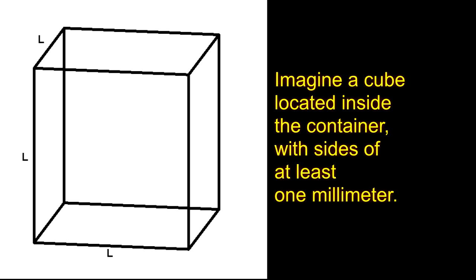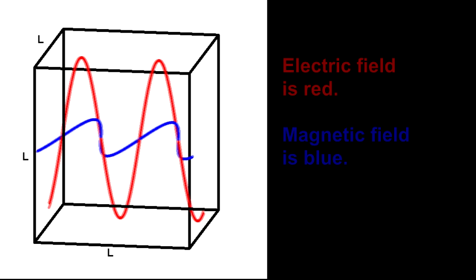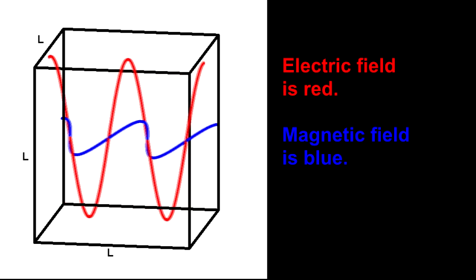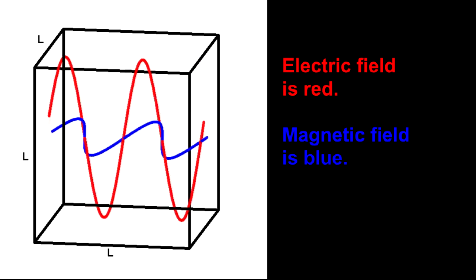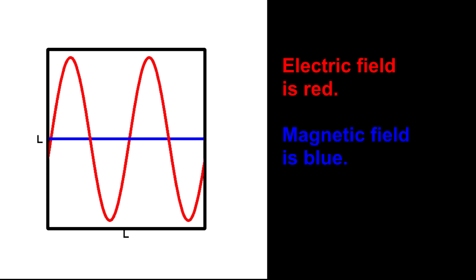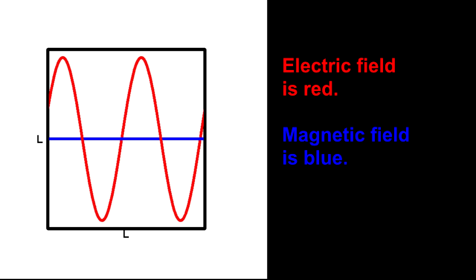Let's show the electric and magnetic fields in red and blue. To simplify things, we rotate to two dimensions and concentrate on the electric field. The magnetic field will just show as a blue line because it's perpendicular to the electric field.